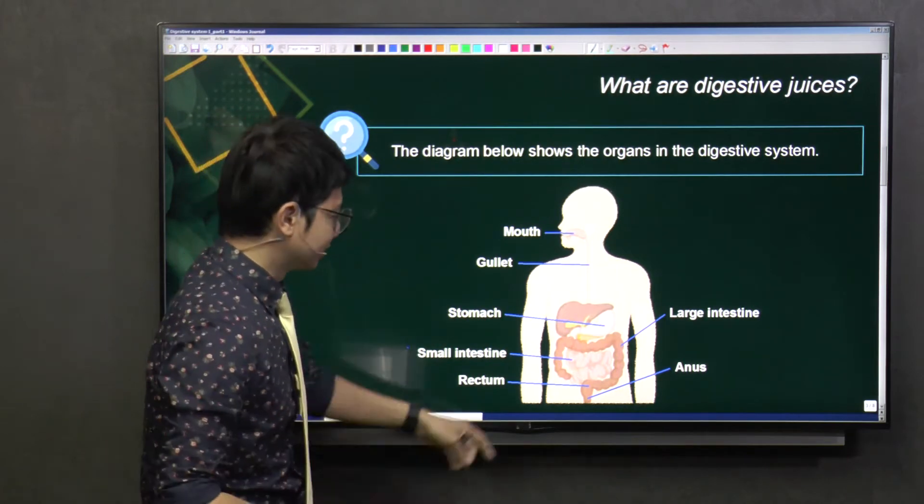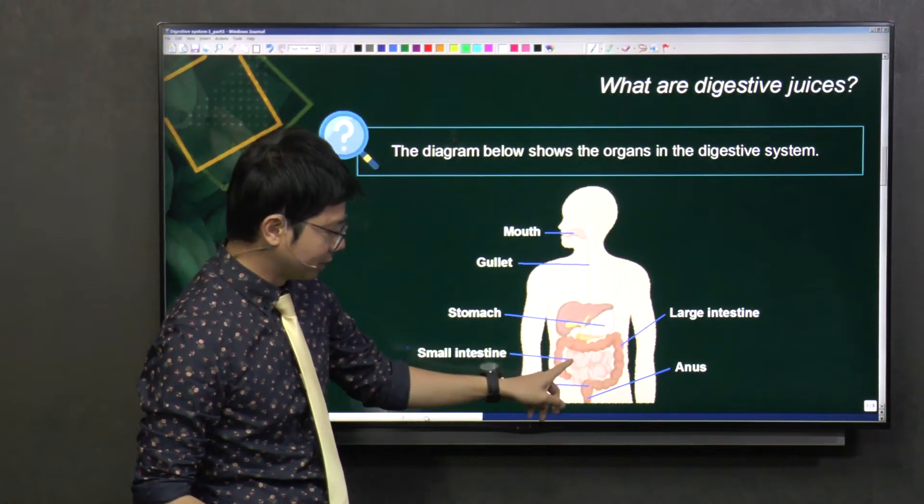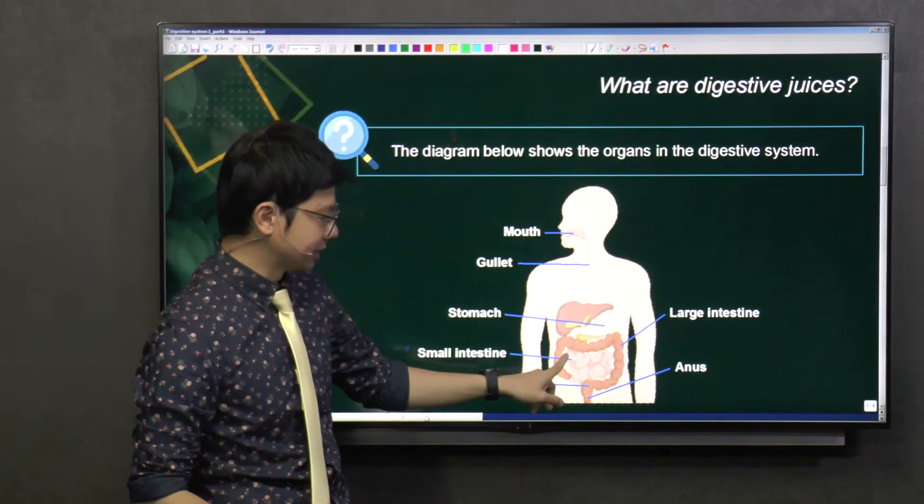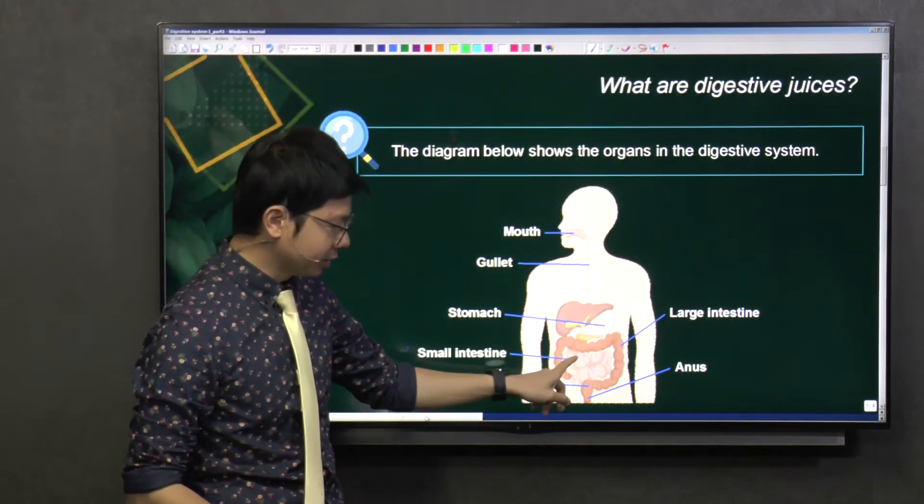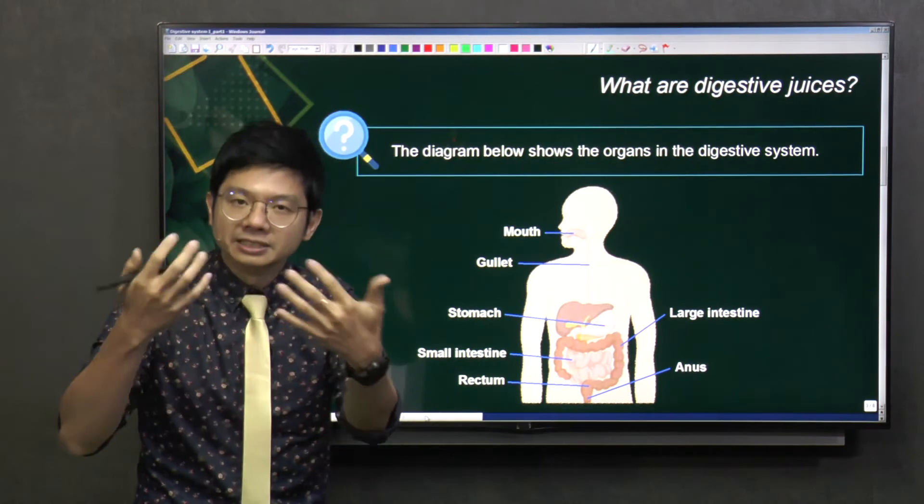After that, the food will go into the small intestine. From the stomach, it goes down into this tube in the middle. This is the small intestine. In the small intestine, the food will still be broken down into simpler substances even further.